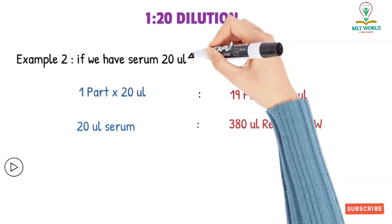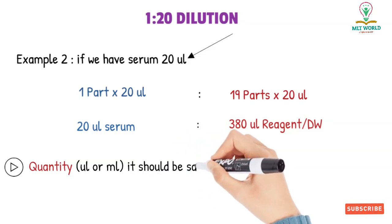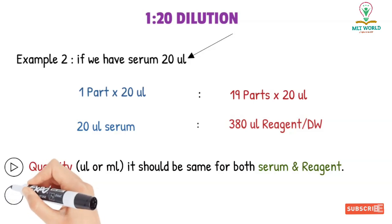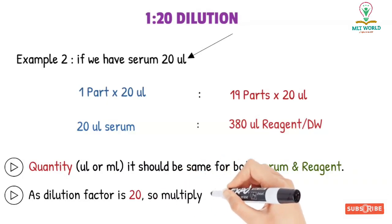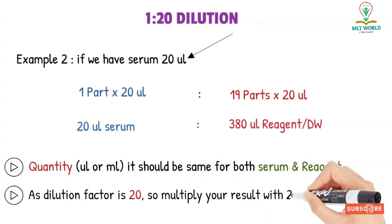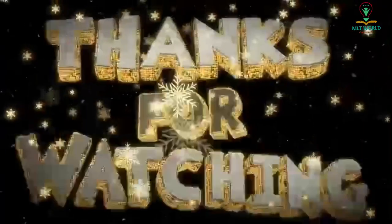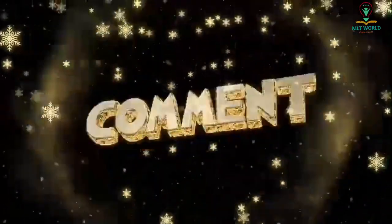Two important points in this dilution method: first, keep the same unit for both sample and reagent — either microliters or mL — so that your pipetting is correct. Second, whatever dilution we use, at the end our result must be multiplied by 20, which is the dilution factor. Whatever result comes for the test, multiply it by 20 to get the final result. I hope you now understand how to make a 1:20 dilution.